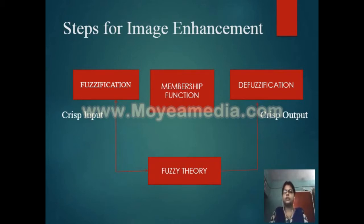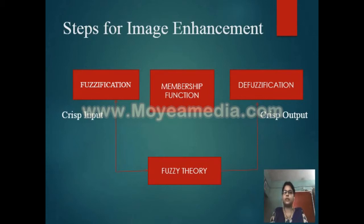In Fuzzification, we transform the crisp input into a matching degree with linguistic variables. In Modification, we make changes over the fuzzy output. Then in Defuzzification, it converts the fuzzy set to a single crisp value. These two steps — Fuzzification and Defuzzification — occur because we don't implement fuzzy hardware. We use coding of image data for fuzzification and decoding of output data for defuzzification to make it possible to implement the fuzzy technique.